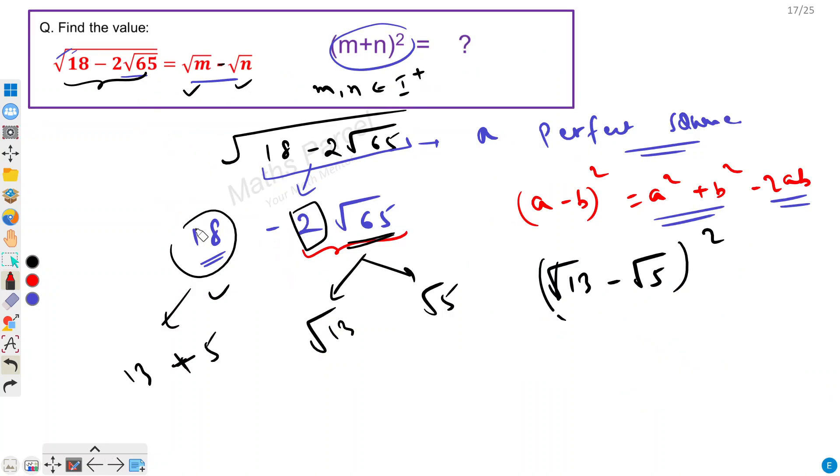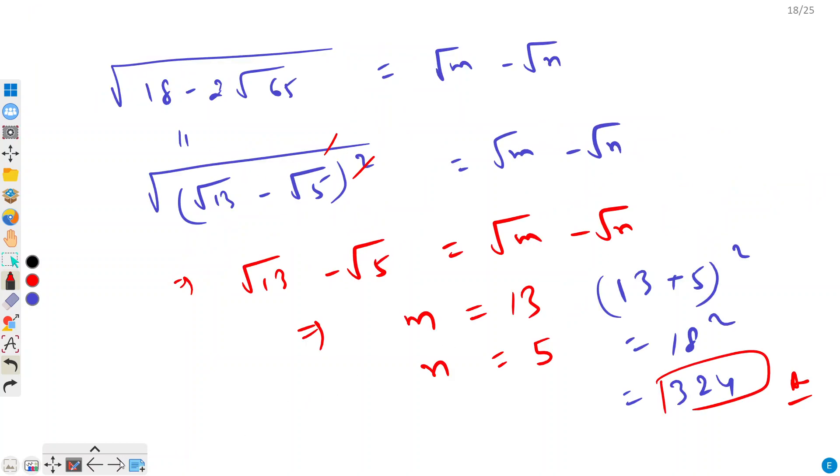So I hope you got the method. The first step was that we tried to make this a perfect square and once we were able to do that then it was very simple. We simply equated this expression with √m - √n, then we got m and n as 13 and 5, and from here we found 18² that is 324.